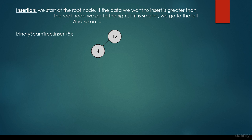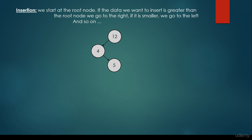What about the 5? We come to the conclusion that it is smaller than the root node, so we go to the left. But it's greater than 4, so we go to the right. But 4 doesn't have any right child, so we insert 5 to be the right child of 4.